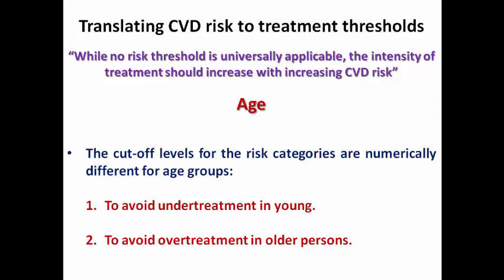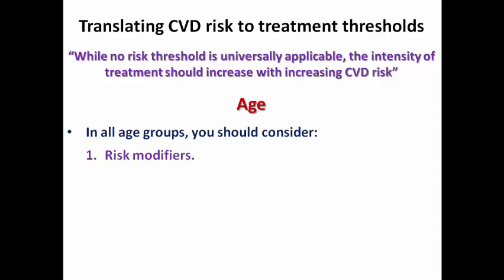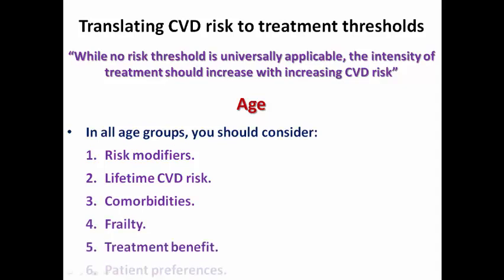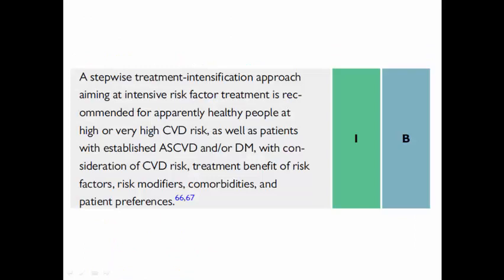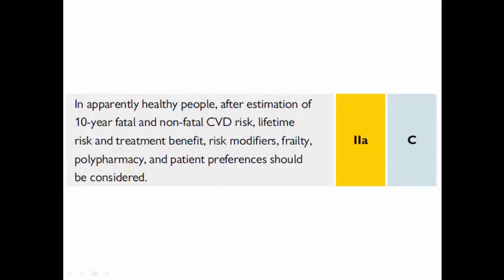In all age groups, I should consider risk modifiers, lifetime cardiovascular risk, comorbidities, frailty, treatment benefits, and patient preferences. There is a Class I indication that patients with high or very high cardiovascular risk should follow a stepwise treatment intensification approach, taking into consideration cardiovascular risk, treatment benefit of risk factors, risk modifiers, comorbidities, and patient preferences. There is also a Class IIa recommendation that in apparently healthy people, after estimating 10-year fatal and non-fatal risk, I should consider lifetime risk, treatment benefit, risk modifiers, frailty, polypharmacy, and patient preferences.